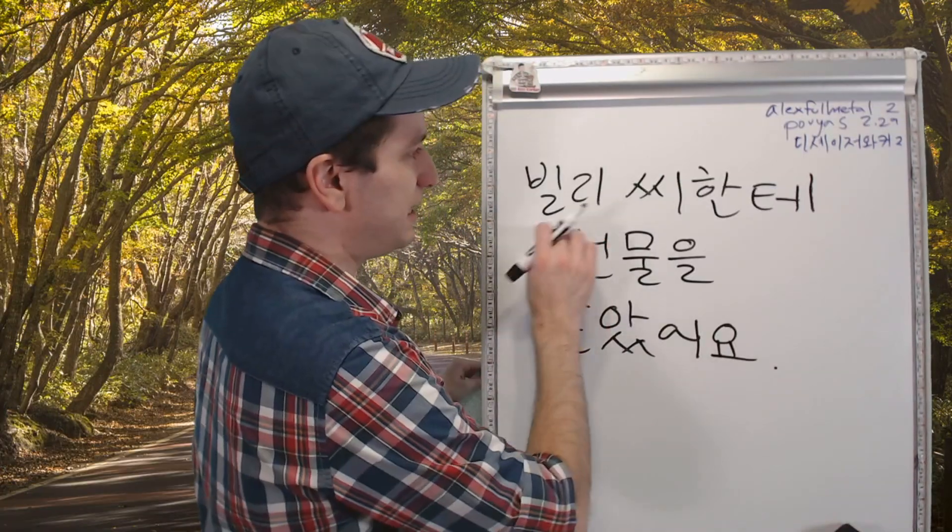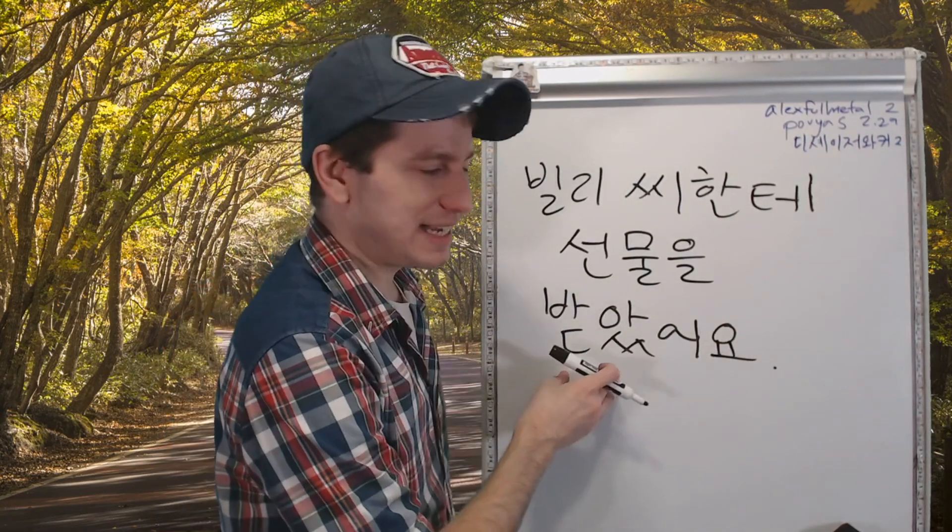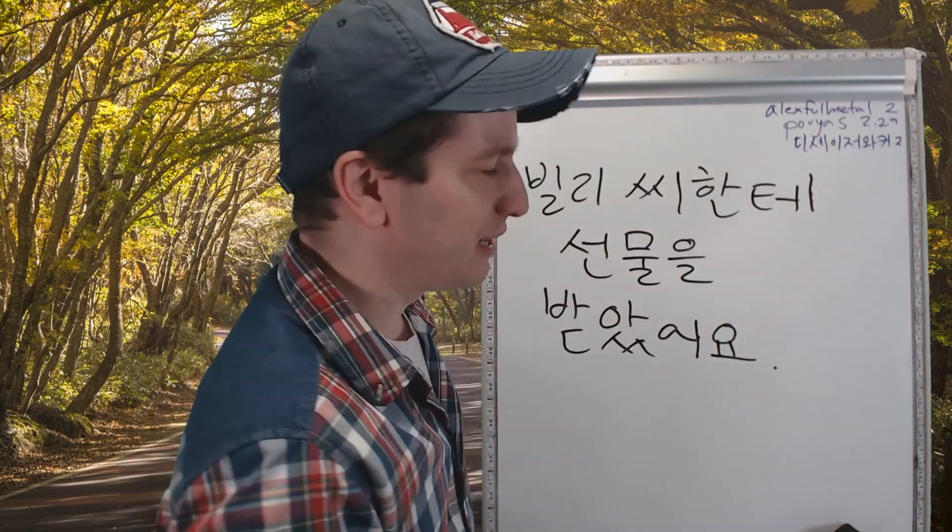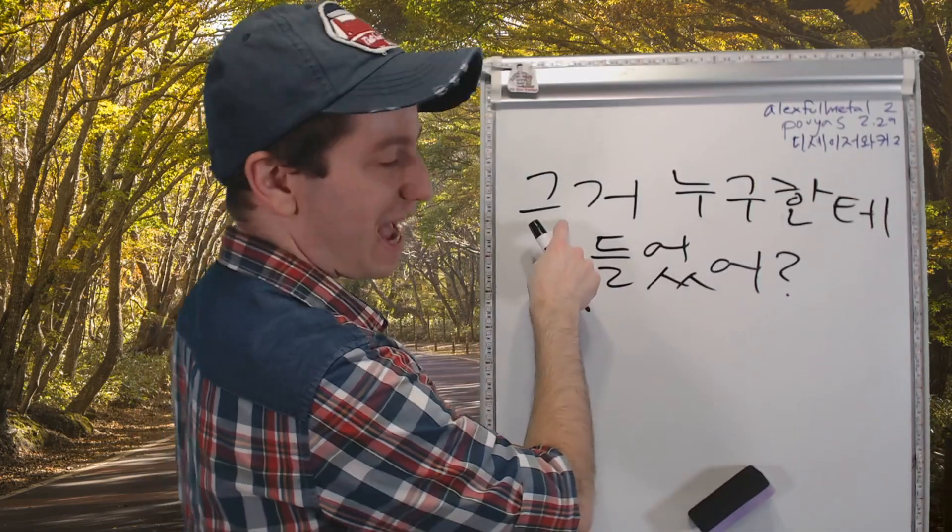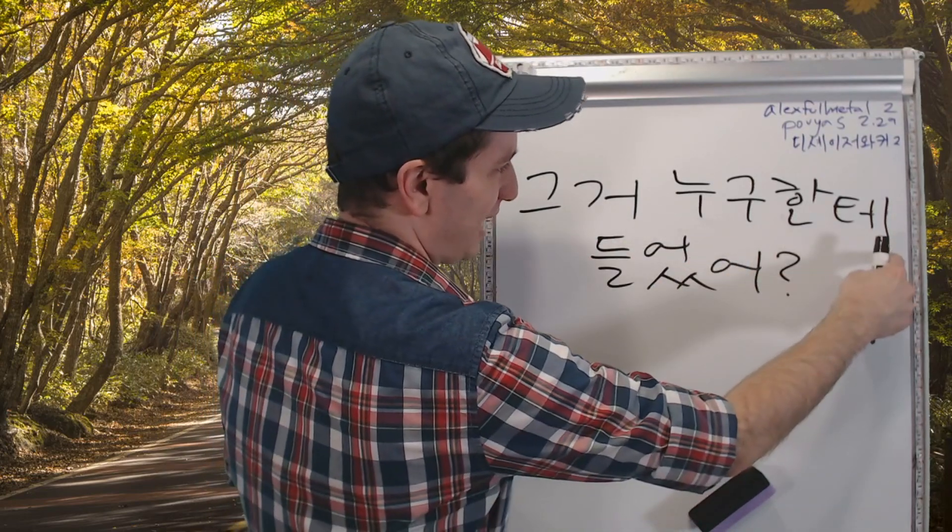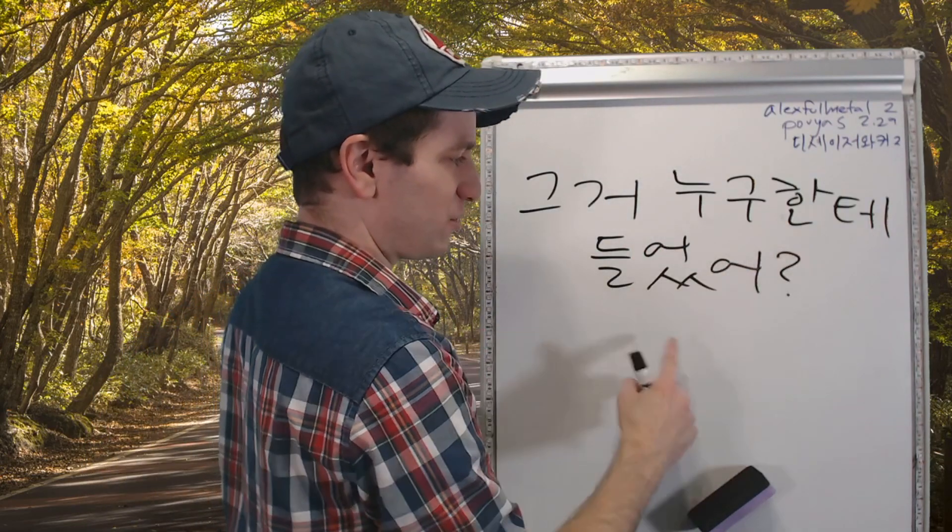Let's do an example. 빌리 씨한테, from Billy, 선물을 받았어요. I received a present from Billy. Or you could say 빌리 씨한테서. 그거, that thing. 누구한테, from who, 들었어? Who did you hear that from? 그거 누구한테 들었어?